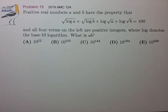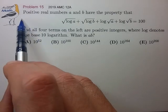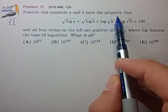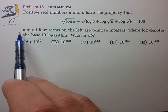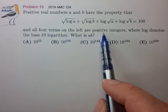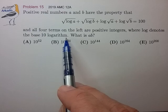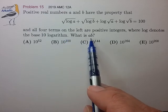Hi, this is problem 15 from the 2019 AMC 12A. Positive real numbers a and b have the property that the log expression √(log a) + √(log b) + log √a + log √b equals 100, and all four terms on the left are positive integers where log denotes the base 10 logarithm. What is the product a times b?